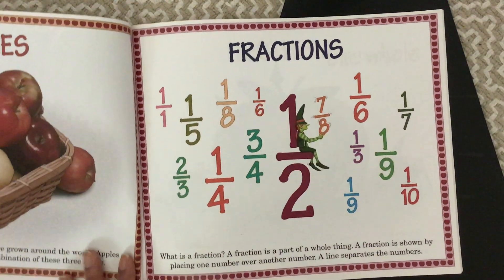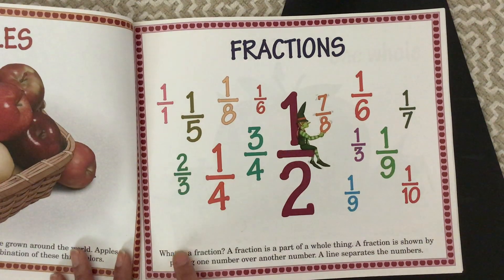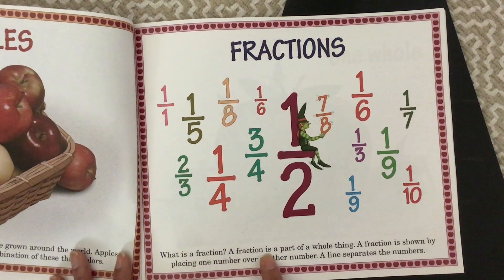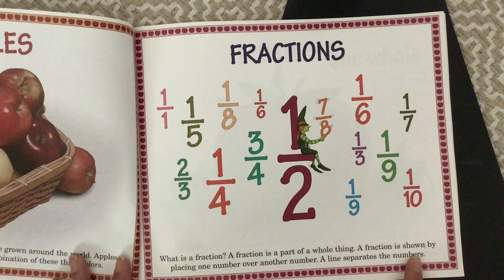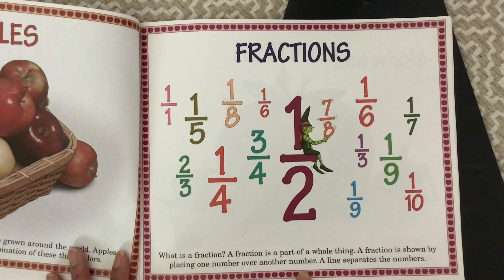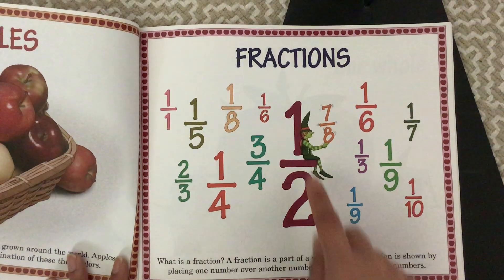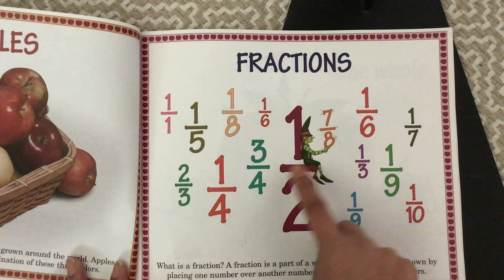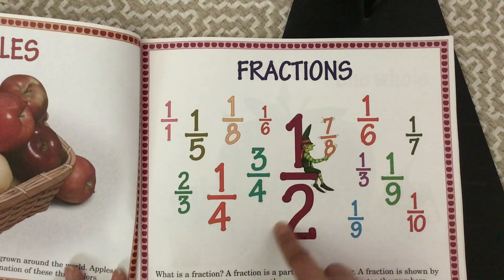Fractions. Can you guys see a fraction you recognize here? What is a fraction? A fraction is a part of a whole thing. A fraction is shown by placing one number over another number. A line separates the numbers. For example, one half, or one out of two.